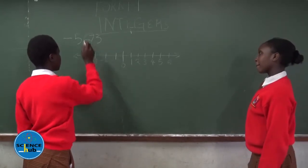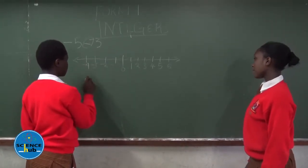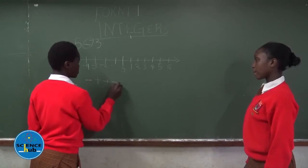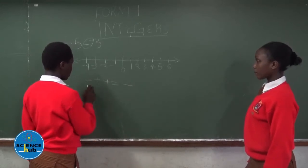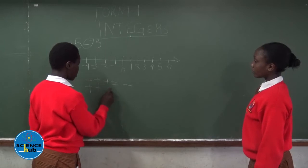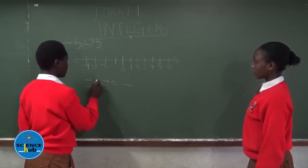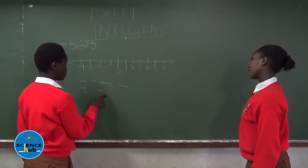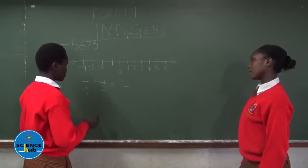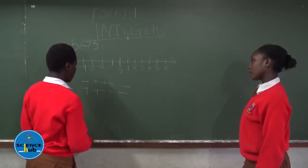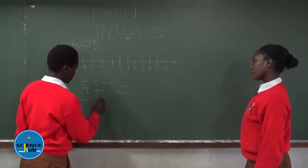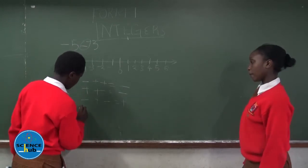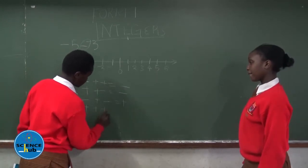First you should know: subtraction plus addition is equal to subtraction. Addition plus subtraction is equal to subtraction. Subtraction plus addition is equal to addition. Negative plus positive is equal to positive. While positive plus positive is equal to positive.